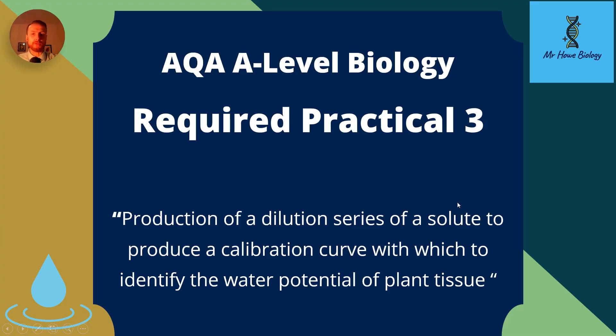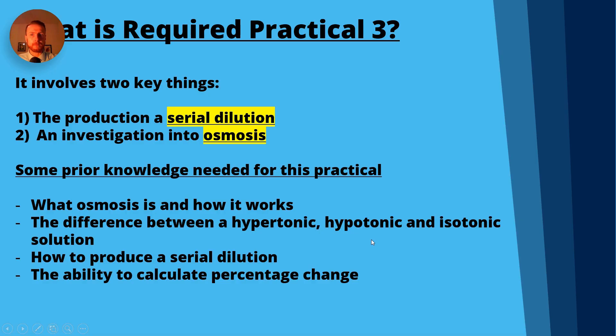AQA A-level biology required practical 3. Within this practical it involves the production of a dilution series of a solute to produce a calibration curve with which to identify the water potential of plant tissue. It involves two key things: the first one is the production of a serial dilution and the second one is an investigation into osmosis.